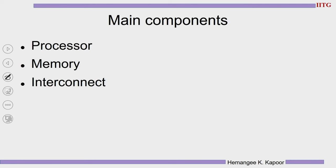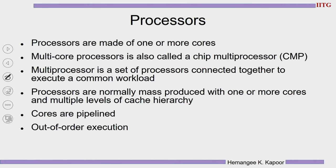We all have studied processors — a quick recap: it has a central processing unit, arithmetic logic unit, fetch and decode logic, etc. You can have multiple such cores forming today's multi-core processor. If you have multiple cores on a single chip, it is called a chip multiprocessor, or CMP. CMP is a multiprocessor with multiple cores attached on the same chip, and these cores execute a common task coordinating with each other.